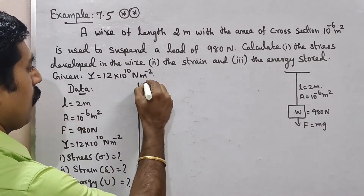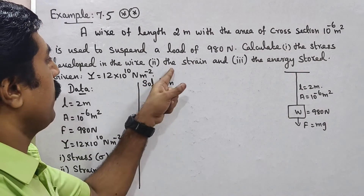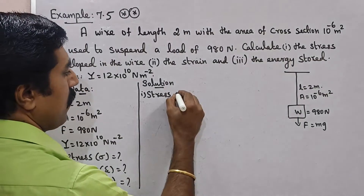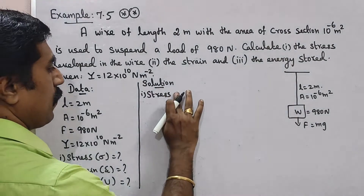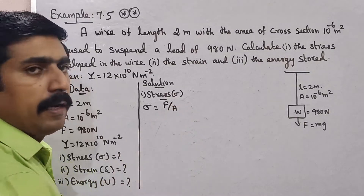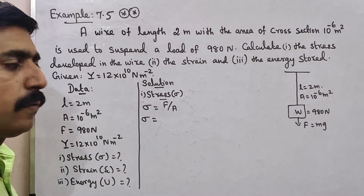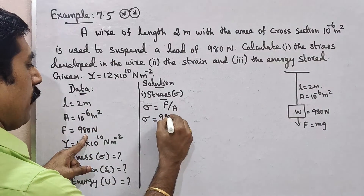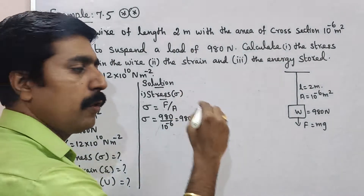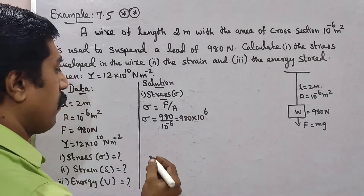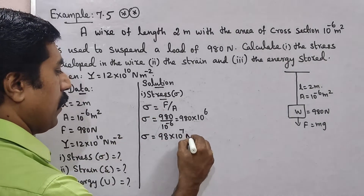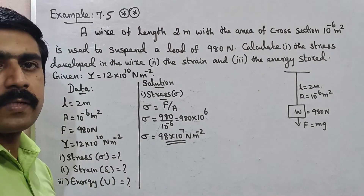Solution. First one — stress. Stress is equal to force by area. So sigma is equal to force 980 divided by area 10 power minus 6, equal to 980 into 10 power plus 6. Therefore sigma is equal to 98 into 10 power 7. Stress unit is newton per meter square, i.e., newton meter power minus 2.